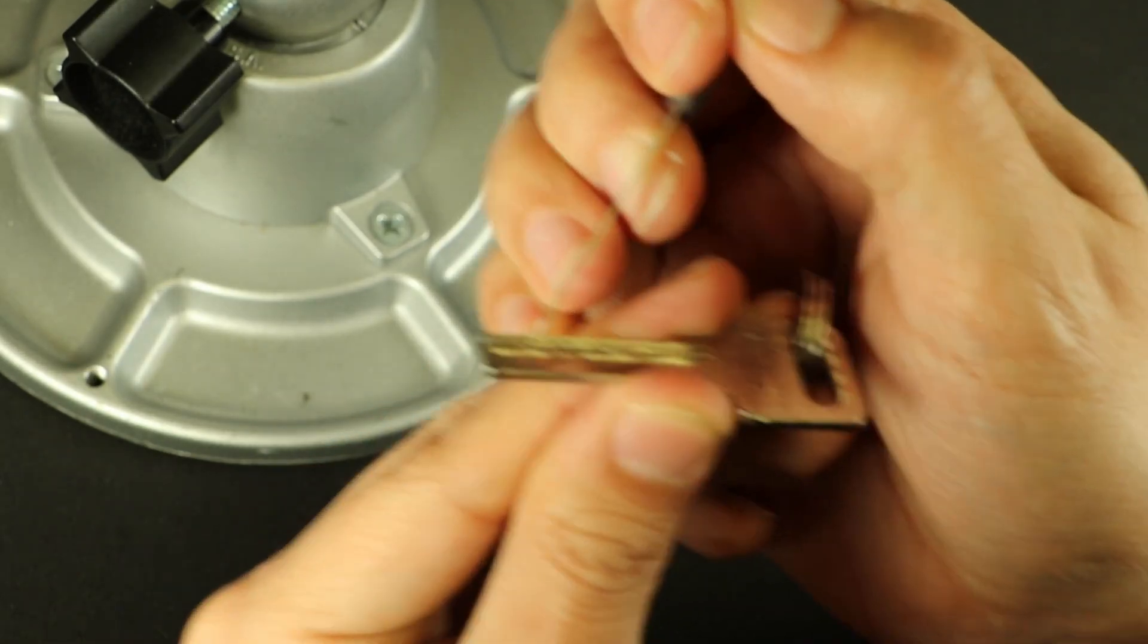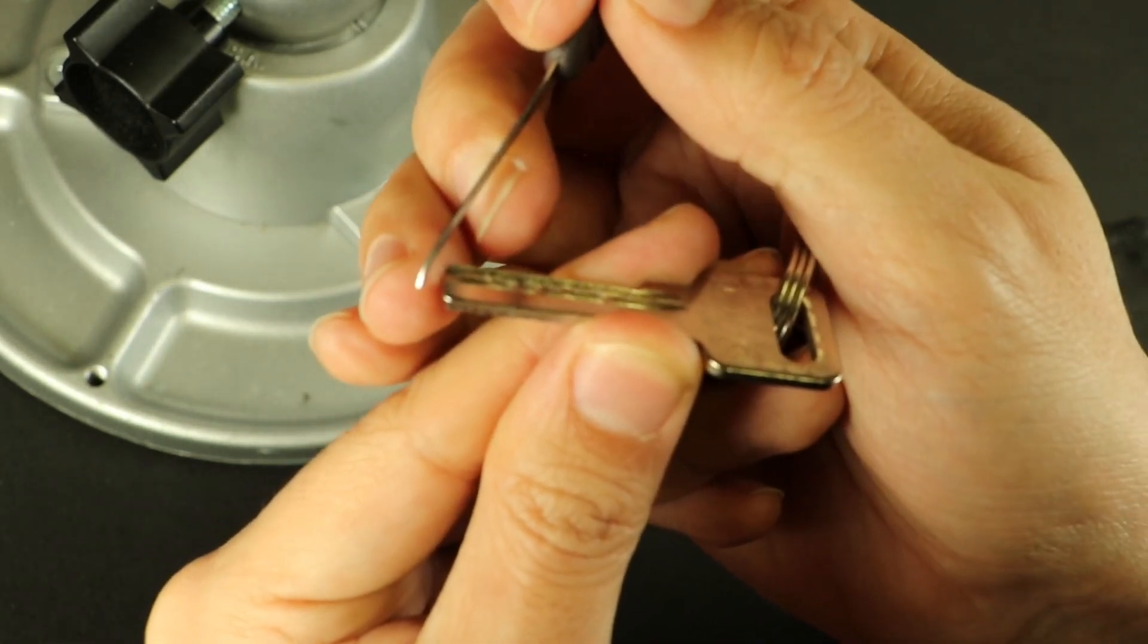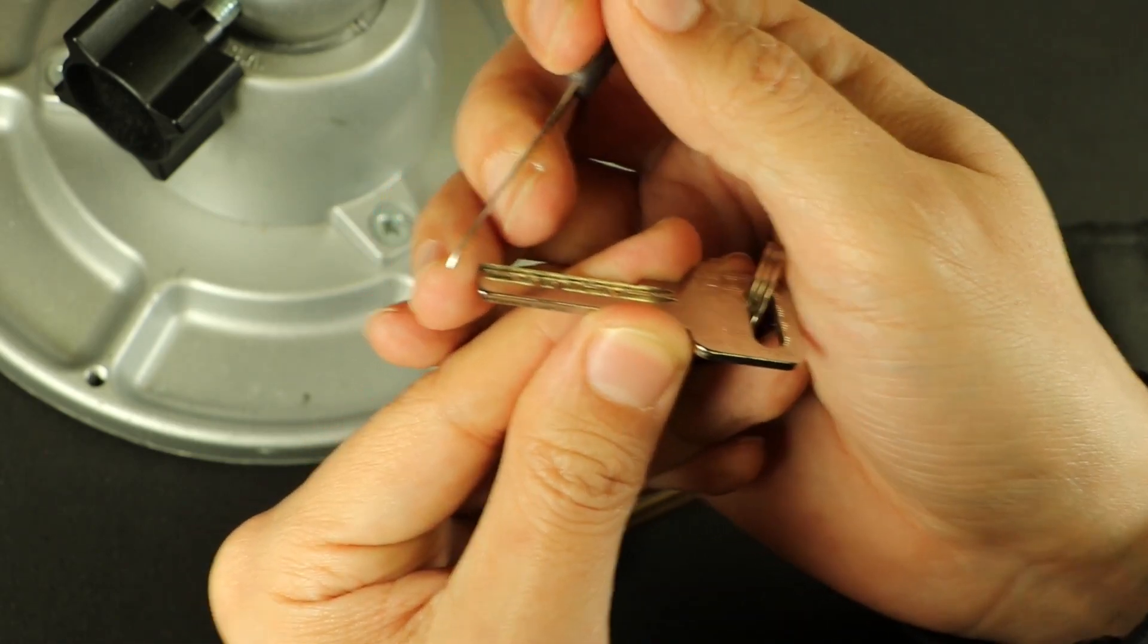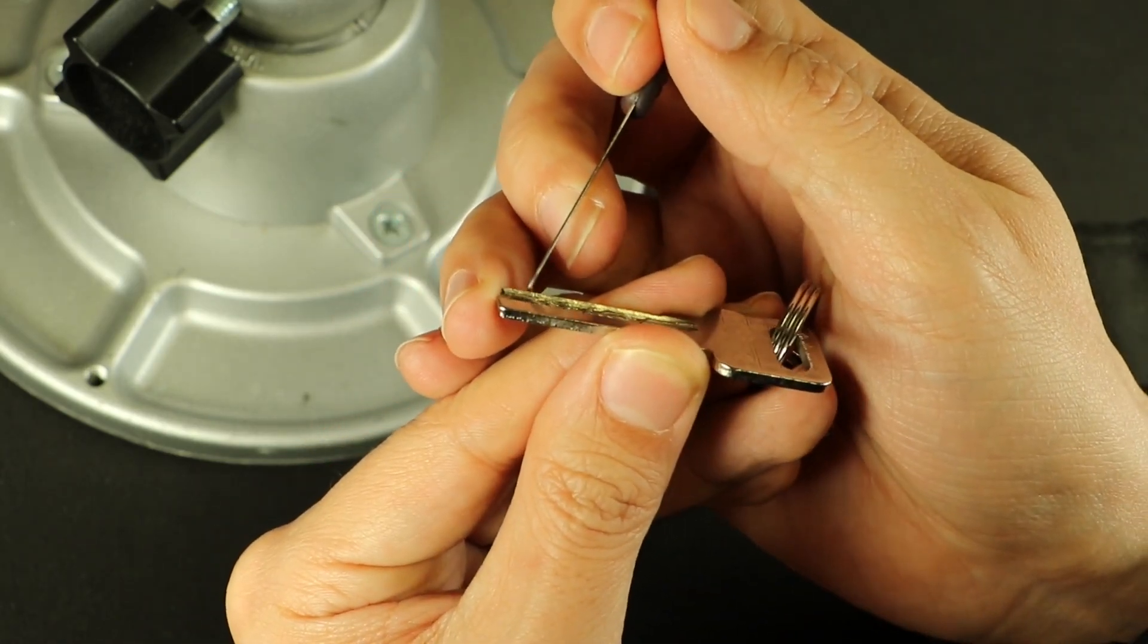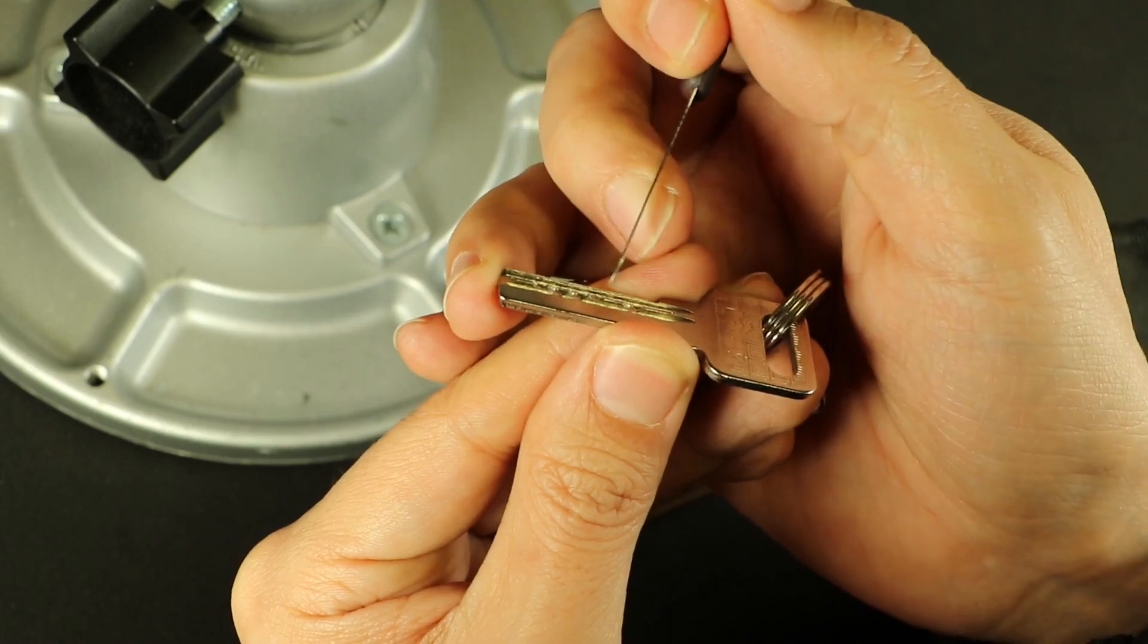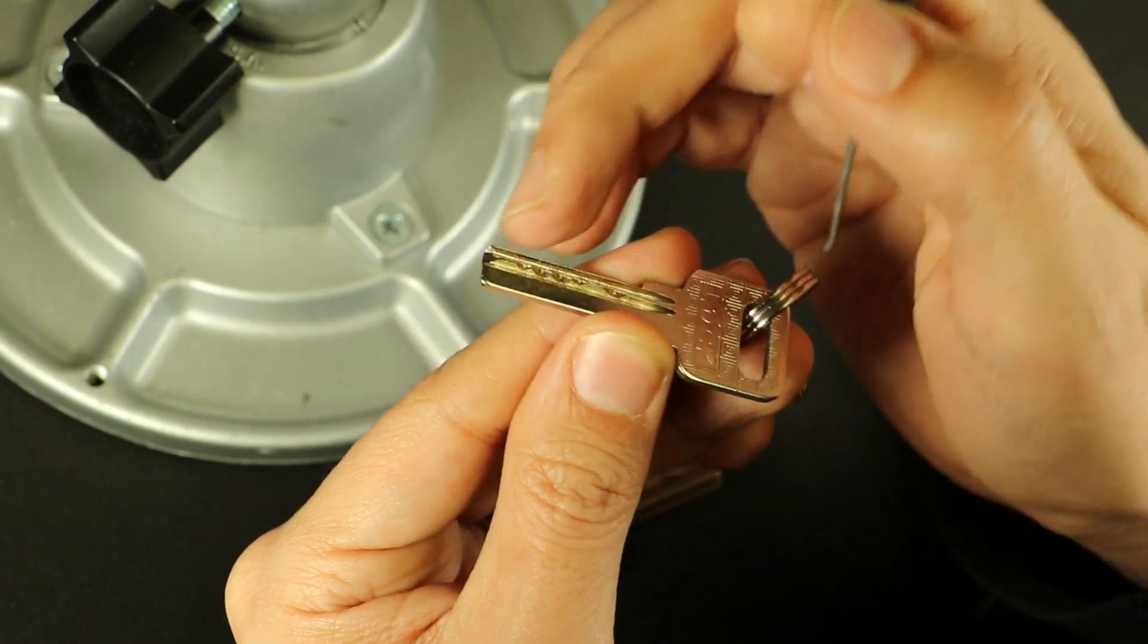If you look closely at your dimple lock key, you can see right here along this, you've got your different heights of cut. Different heights of cut.